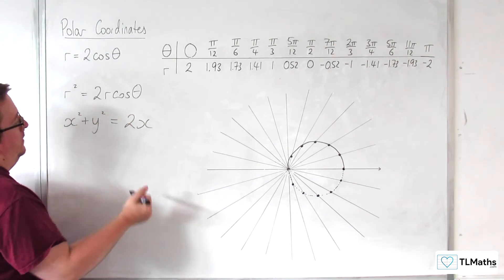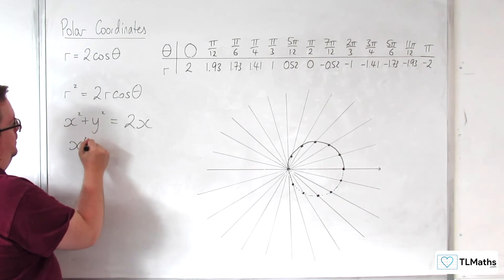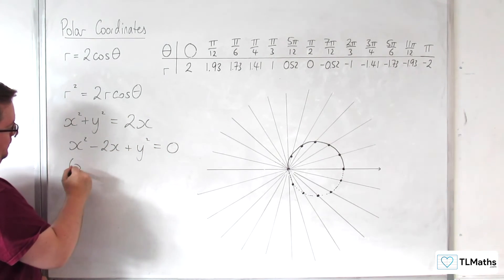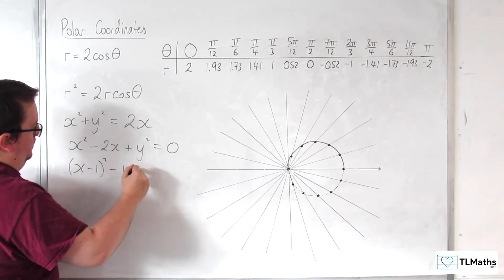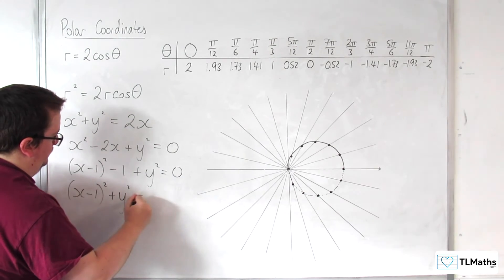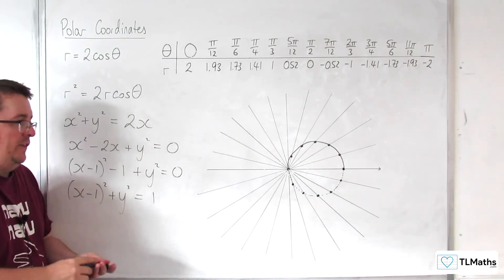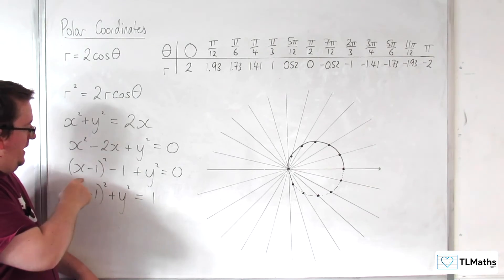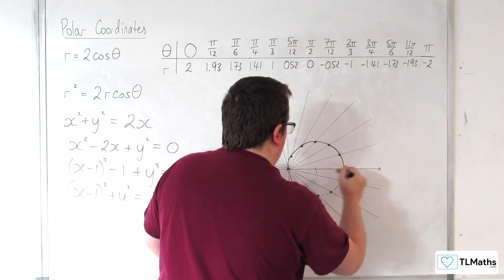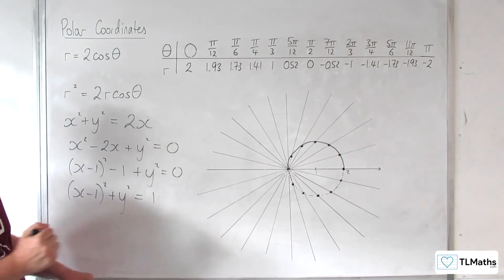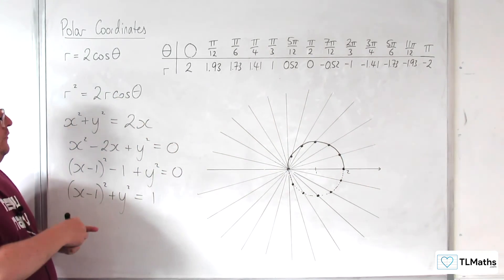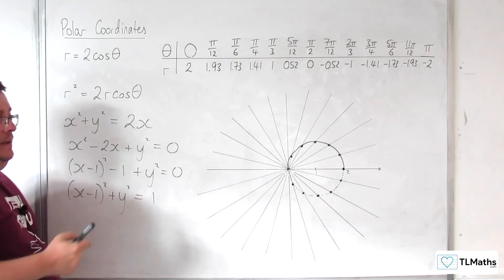So then if I subtract the 2x from both sides, complete the square on the x's and rearrange, I can see that this is a circle centered at the point (1, 0), so 1, 0, with radius 1. And so I can see that actually what I've traced out here is a circle.